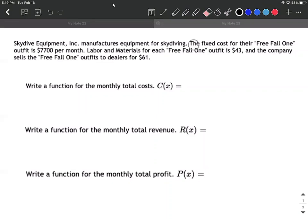So we have the fixed cost for their Free Fall One outfit is $7,700 per month, and labor and materials for each Free Fall One outfit is $43. And the company sells the Free Fall One outfits to dealers for $61.